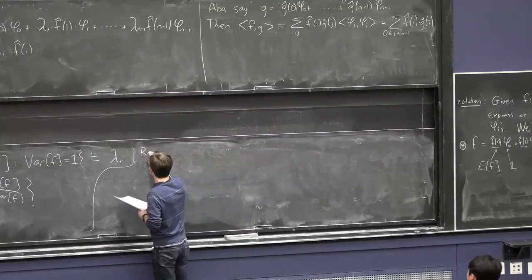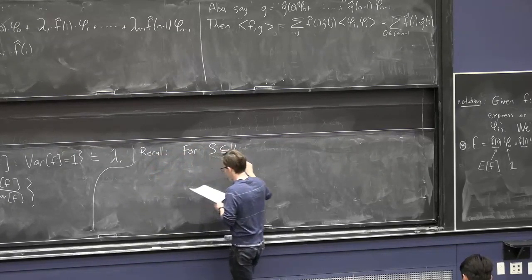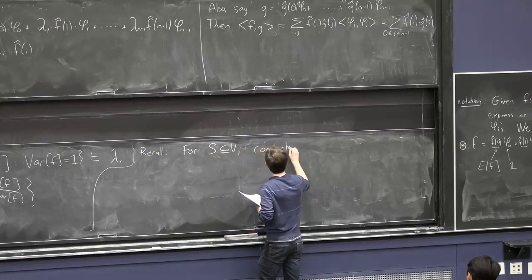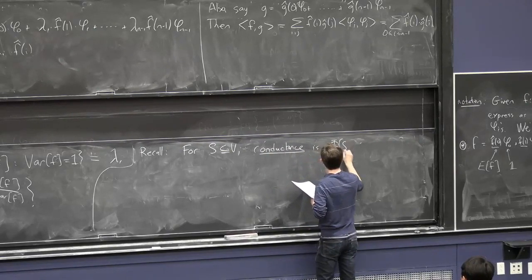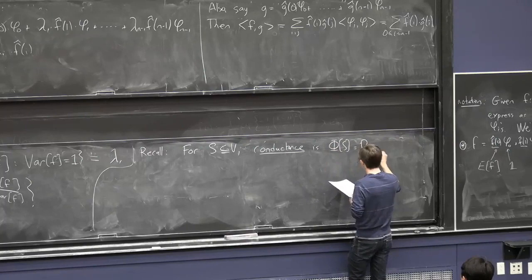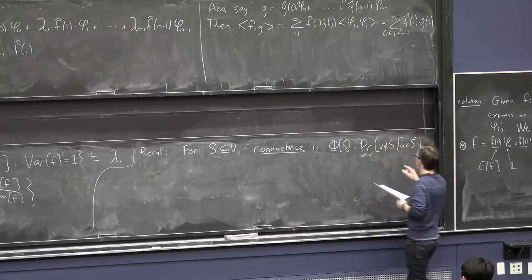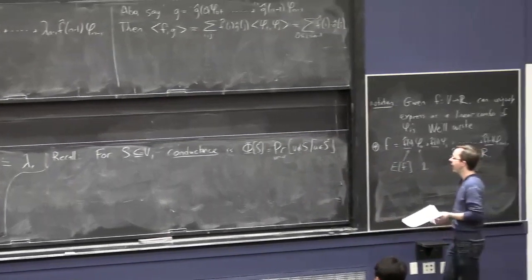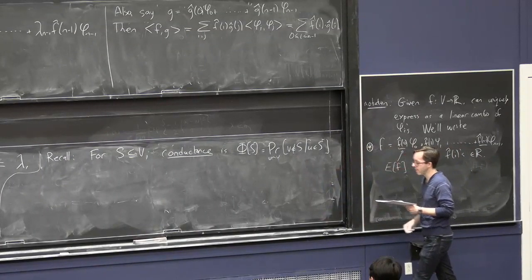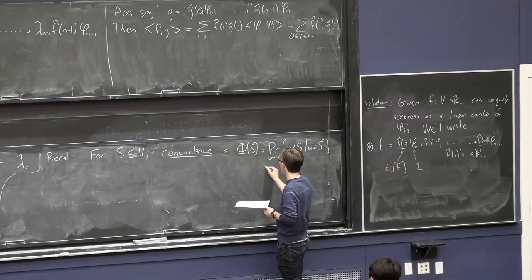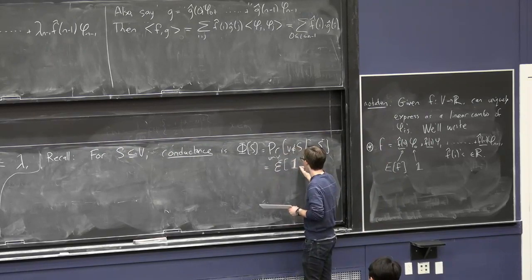So, let me remind you from last time. If you have a subset S of vertices, its conductance is this. Phi S is the probability, if you take a random edge, that V is outside S, given that U is in S. Or you can think of it as you pick a random vertex in S, proportional to its degree, and take a random step, and see if that takes you out of S. OK. So, this is like the sort of escape probability for S.